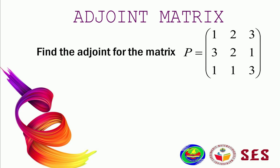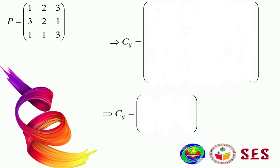First, we need to know how to find the adjoint matrix. We go to the first example: find the adjoint for matrix P. To find the adjoint we need to calculate the cofactor matrix. You can pause this video and try to find the cofactor matrix for matrix P. Remember the diamond shape of signs: negative, negative, negative, positive.